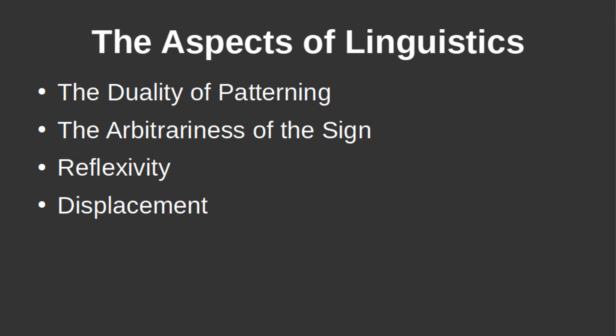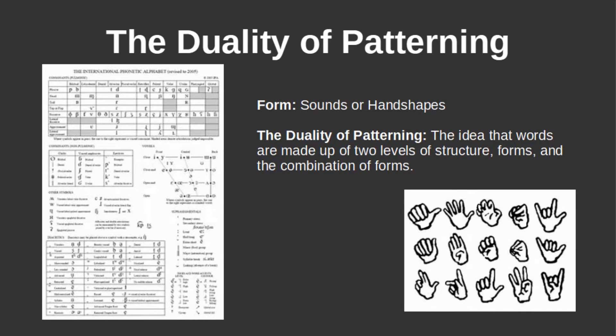The ability to consciously reflect on the nature of language is almost exclusive to humans, and linguists have broken down language into two groups. There are forms, which are sounds or handshapes, and combinations of forms, which make meanings of words. This is known as the duality of patterning, the idea that words are made up of two levels of structure.